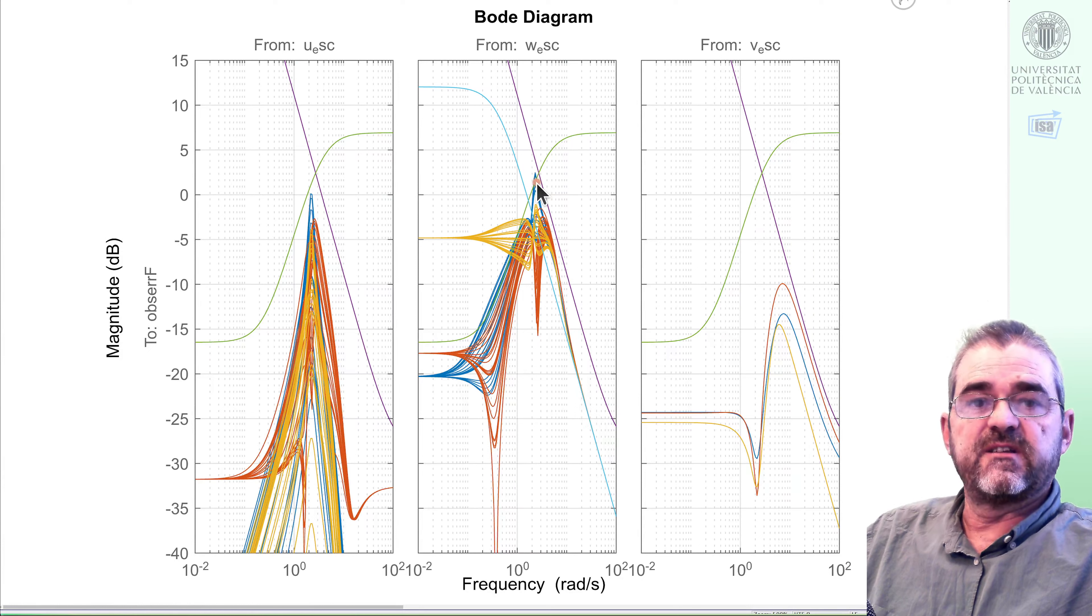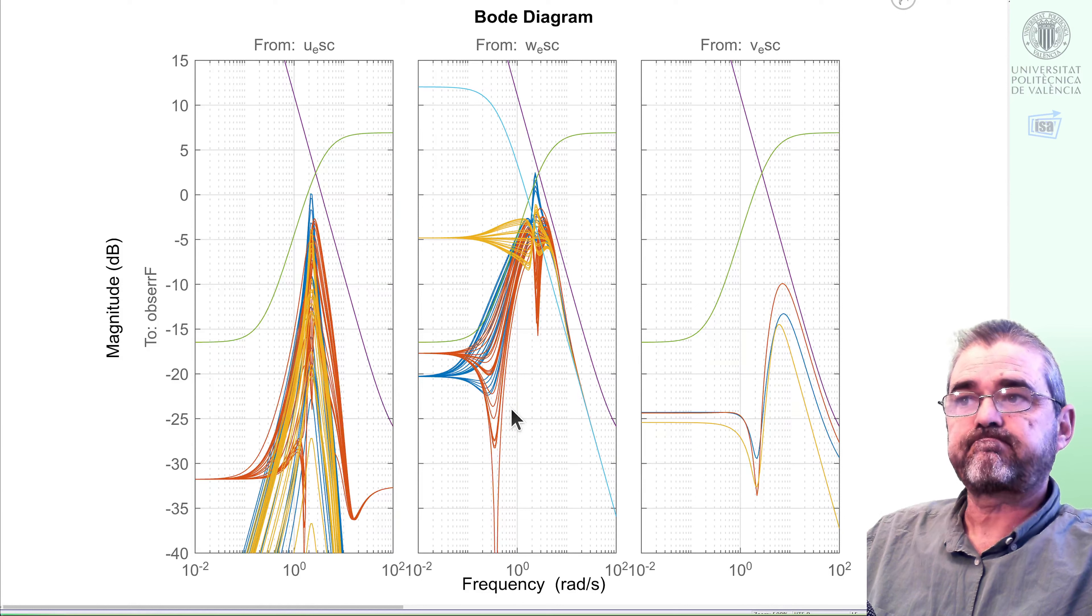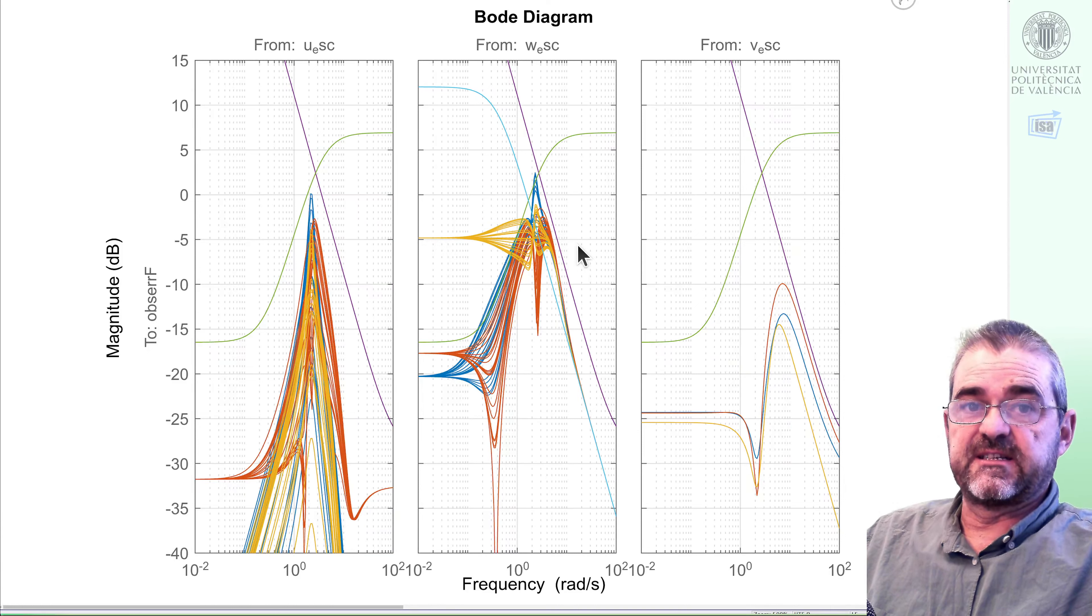The blue thing H infinity does not meet the required specification, that's why worst-case gain was above 1, but the mu synthesis red thing keeps under the templates. The H2 minimum variance observer, Kalman filter, plays in another league because we did not put output weights. It targets a reference minimum variance design whose output we'll see in time domain next.